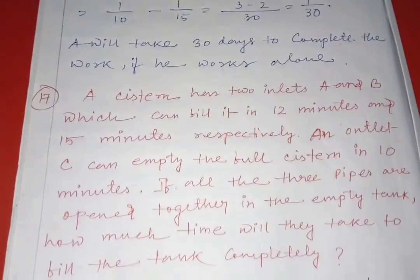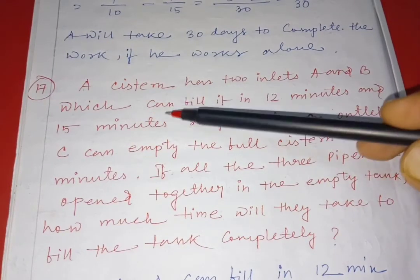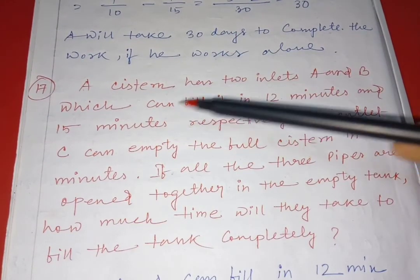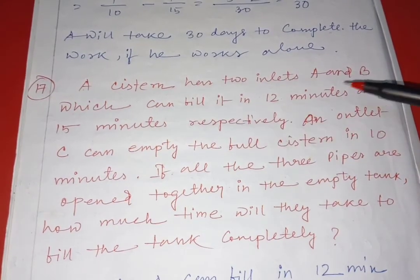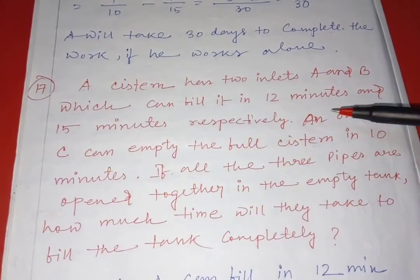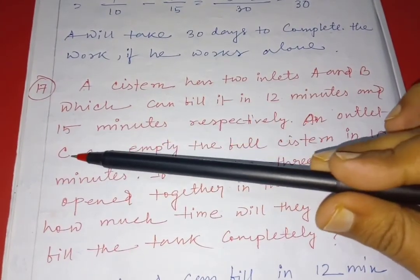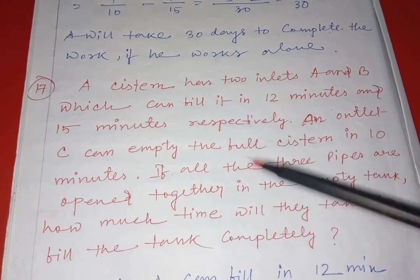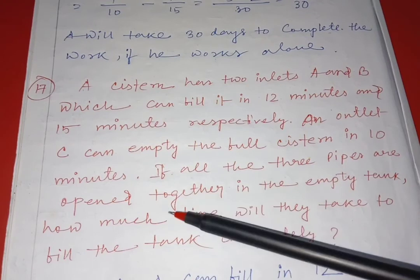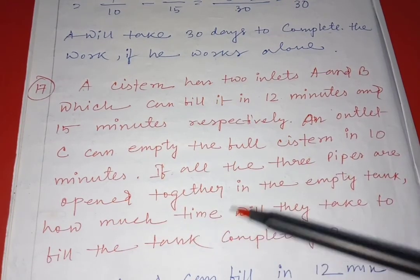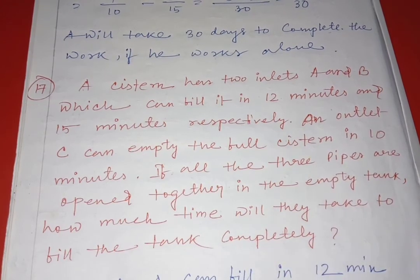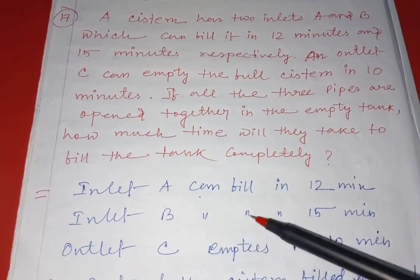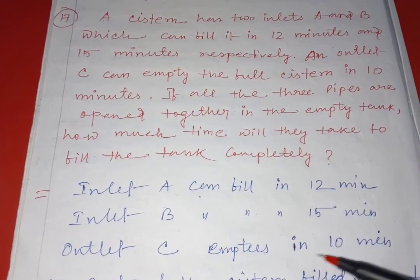Now question number 70. The question is a little bit big, so go through it carefully. A cistern has two inlets A and B — with the help of A and B, water comes in and fills the tank — in 12 minutes and 15 minutes respectively. An outlet C can empty the full cistern in 10 minutes. That means with tap C, water goes down and the cistern gets emptied. If all three pipes are opened together in an empty tank, how much time will they take to fill the tank completely? Inlet A fills in 12 minutes, inlet B fills in 15 minutes, and outlet C empties in 10 minutes.